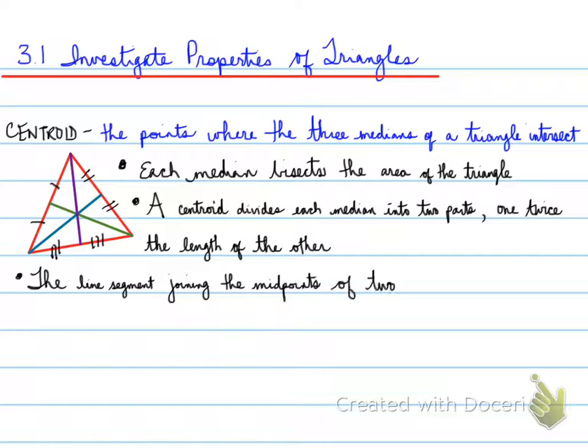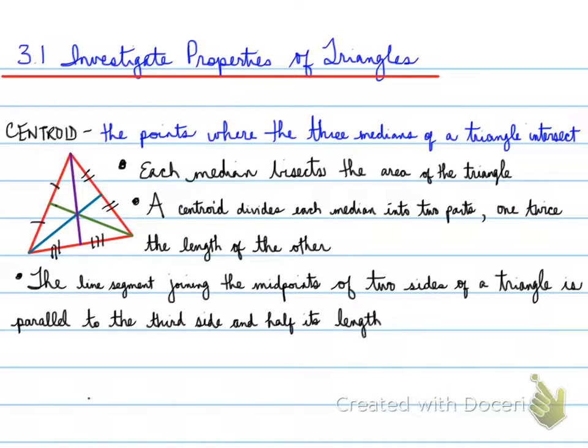The segment joining the midpoints of two sides of a triangle is parallel to the third side and half its length. If I draw a line connecting two midpoints, this particular line is parallel to this side. And not only is it parallel, but this one is also half the length of this side. So if I found the length of this, I would know the length of this.